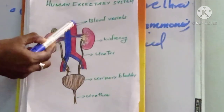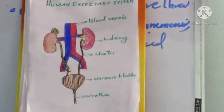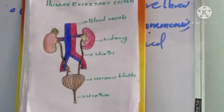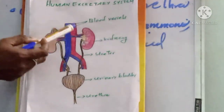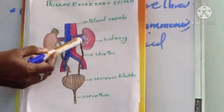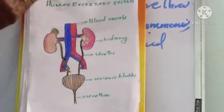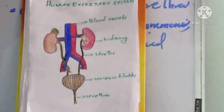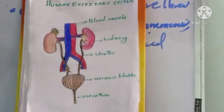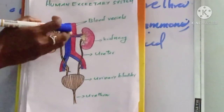Blood is brought to the kidneys through arteries. As the blood flows through the kidneys, the tiny tubules filter the blood and separate waste from it. The filter-like tubules separate the waste materials from the blood as it flows through the kidneys.